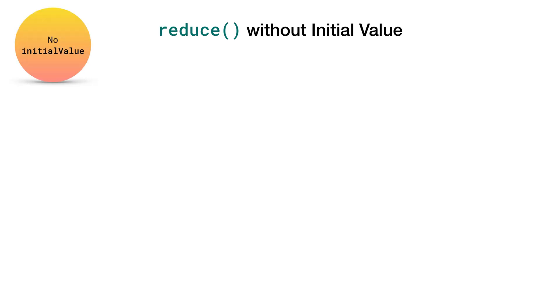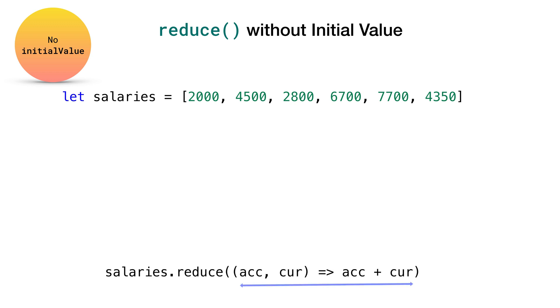Let's look at the step-by-step execution of the same example with no initial value. To calculate the sum of all elements in salaries array, we call reduce method and only pass the first argument which is the reducer function. Since there is no initial value, accumulator grabs the first element in the array to start with which is 2000 and the current value is the second element in the array 4500.